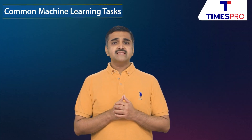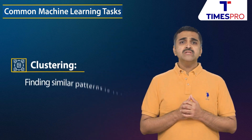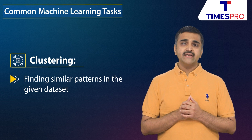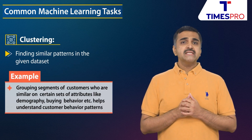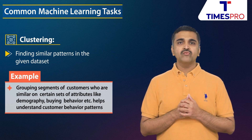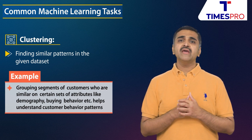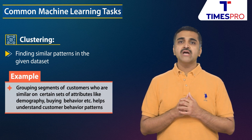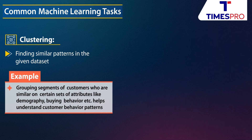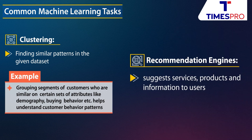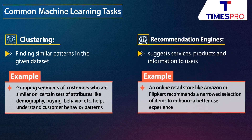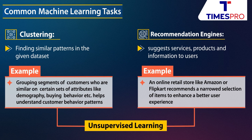Moving on to the next set of machine learning tasks: clustering involves finding similar patterns in a given data set. For example, grouping segments of customers who are similar on certain attributes like demography and buying behavior helps businesses understand customer behavior patterns. Recommendation engines suggest services, products, and information to users — for example, an online retail store like Amazon or Flipkart recommends a narrowed selection of items to enhance the user experience. Both clustering and recommendation engines are common machine learning tasks under unsupervised learning.